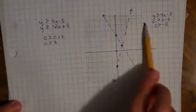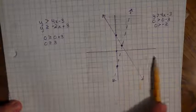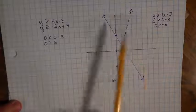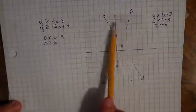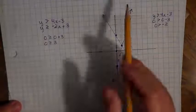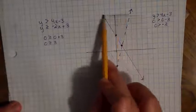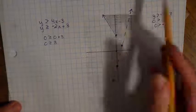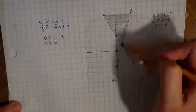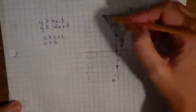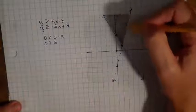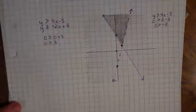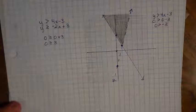I'll shade the other side lightly. Between the two shadings, because I shaded this section twice it's slightly darker — this is my solution area. I'll come in and make sure to shade that darker, so it's very obvious that this is the region that is true for both inequalities and therefore the solution to the system.